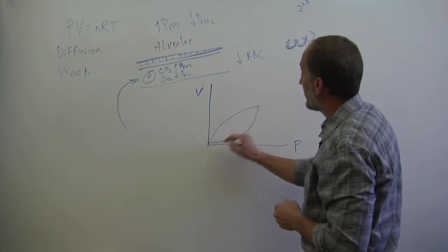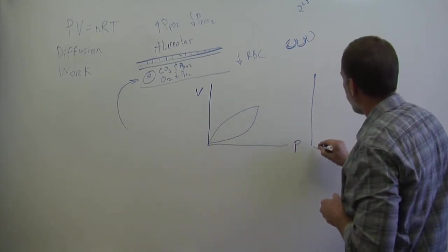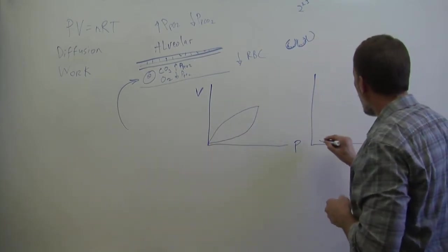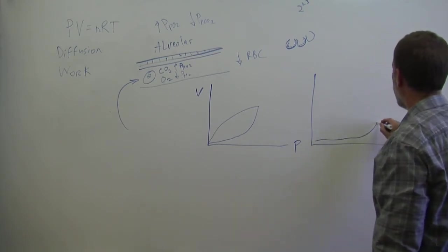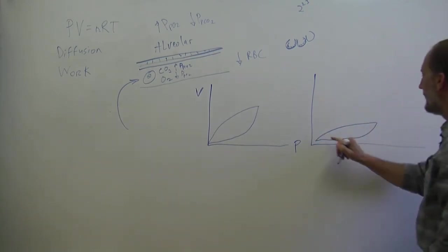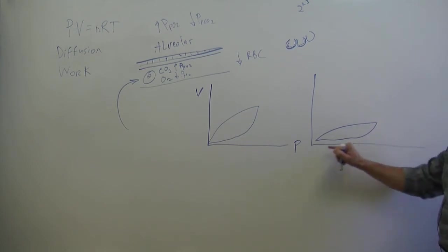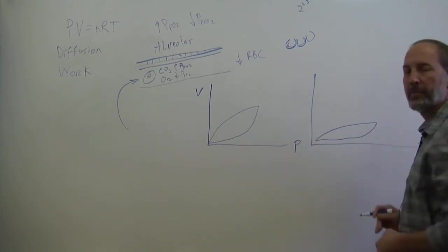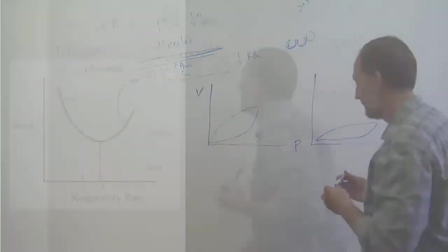There are some diseases where you see a lack of surfactant. And what will happen is that pressure volume curve will be like this. So very, very tight. It requires a tremendous amount of work just to open up that lung.